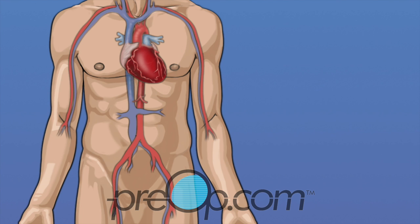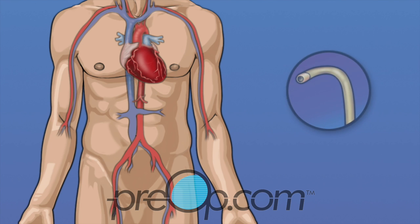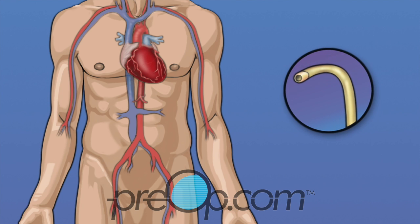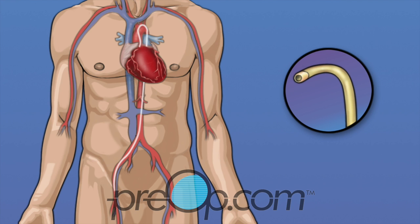To do a cardiac cath, a cardiologist places a thin tube called a catheter through an artery in your leg or arm to reach your heart. The femoral artery in the leg is most commonly used. The catheter is inserted into the artery in the groin, then guided to reach the heart.